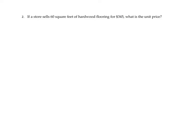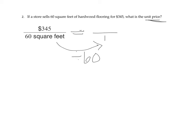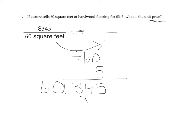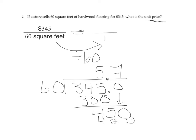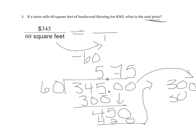Number two: if a store sells 60 square feet of hardwood flooring for $345, what is the unit price? Unit price means for one, so I need to divide by 60. So 345 divided by 60: 5 times 5 gives me 300, leaving 45. Add a decimal, bring down a 0 to get 450. Then 60 times 7 is 420, leaving 30. Bring down a 0 to get 300, and 6 goes into 300 five times. So the answer is $5.75.